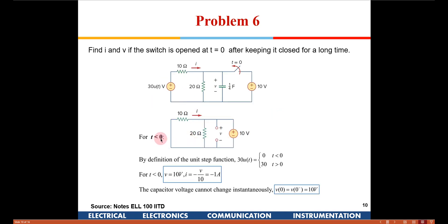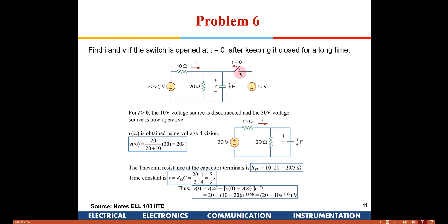At t equals 0, the initial voltage across the capacitor is 10 volts, and the initial current is −1 ampere (10 V divided by 10 ohms, with opposite sign due to direction convention). To find the time constant after the switch is opened, we look from the capacitor side: the Thevenin resistance is 10 ohms in parallel with 20 ohms, which equals 20/3 ohms. The time constant is R_TH × C = (20/3) × (1/4) = 5/3 seconds.